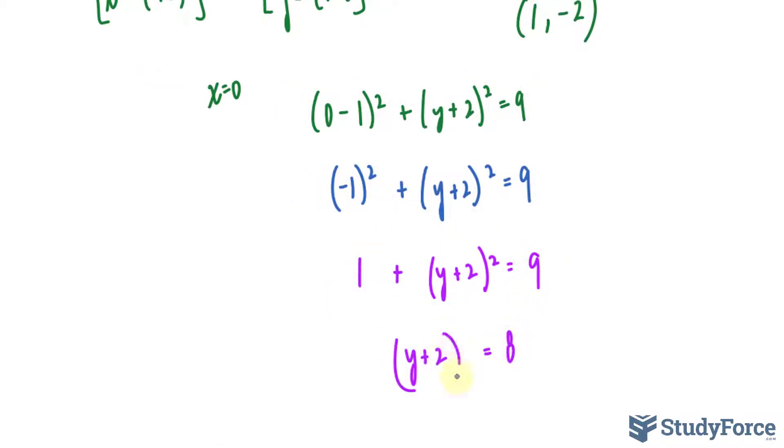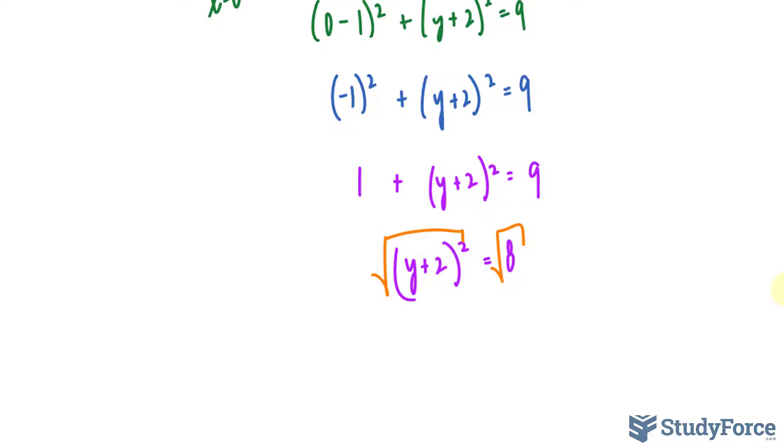(y plus 2) squared. Square rooting both sides. And you'll know that you don't have a y intercept in this case if this number happened to be negative. If it's negative, then you end up with imaginary numbers and you can't specify an intercept on an xy plane.